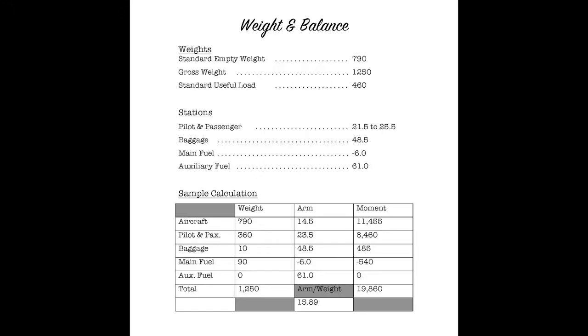Then if we multiply our weight by the arm, we get a moment of 84.60. Baggage in this case shows 10 pounds, which isn't too far off. There's a little bit of stuff in the back, plus the cameras we're adding. Logbooks in the back and then a couple extra headsets back there. The arm is 48.5, so 10 times 48.5 is 485 pound-inches.